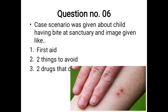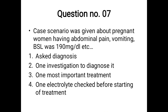Question seven: a case scenario of a pregnant woman with abdominal pain, vomiting, blood sugar 190 mg/dL. Diagnosis: diabetic ketoacidosis (DKA). Note the DKA criteria in pregnancy. Investigations: bedside VBG, urine ketone, blood sugar, blood ketone, beta-hydroxybutyrate. The most important treatment: hydrate the patient with 1 liter IV fluid over 30 minutes to one hour. Before starting treatment, check electrolytes — specifically potassium.